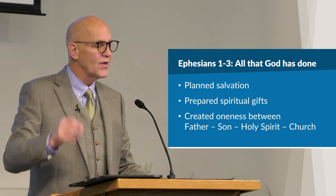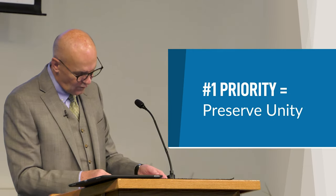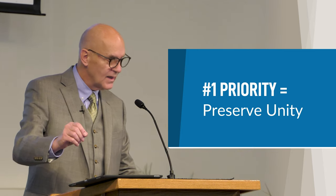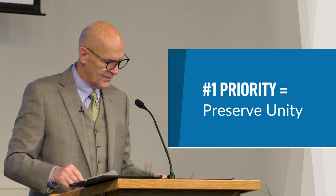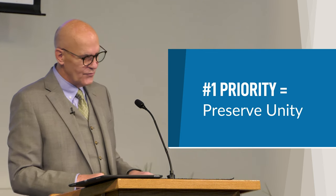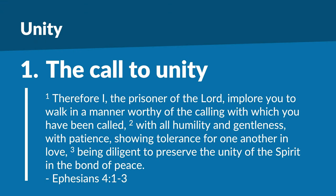When he gets to chapter 4, Paul then explains the response that God expects from the church because of all the things he's done for it. The number one thing that God expects is that the church preserve the unity — not conformity — that he has already established within the group. So let's read verses 1–3, Paul's call to unity: 'Therefore I, the prisoner of the Lord, implore you to walk in a manner worthy of the calling with which you have been called, with all humility and gentleness, with patience, showing tolerance for one another in love, being diligent to preserve the unity of the Spirit in the bond of peace.'